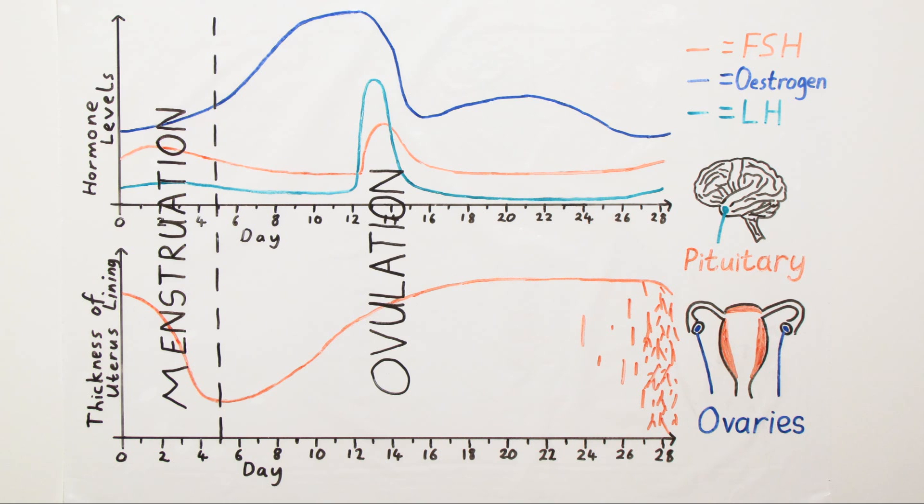At the start of the menstrual cycle which is 28 days long, roughly a month, the levels of FSH produced by the pituitary gland start to increase. This stimulates an egg cell in the ovaries to start maturing ready for release later in the month and it also stimulates the ovaries to start producing larger amounts of estrogen.